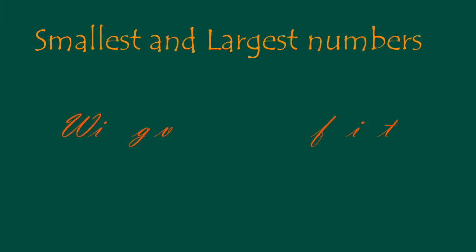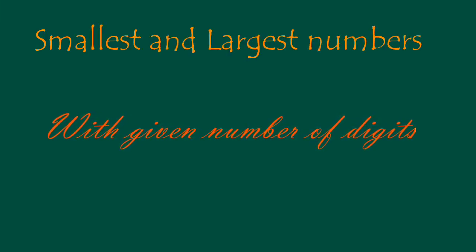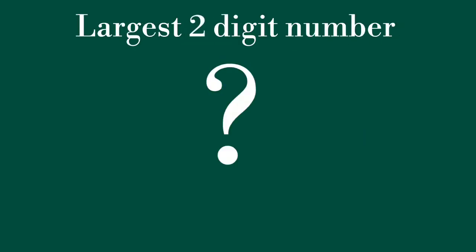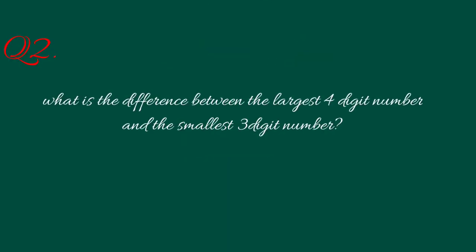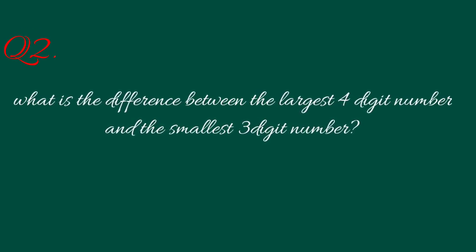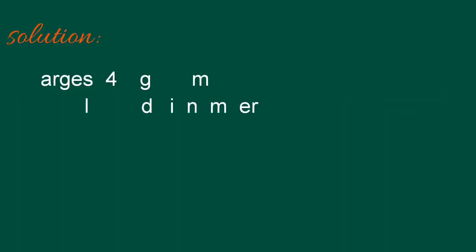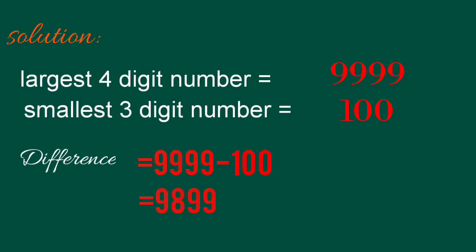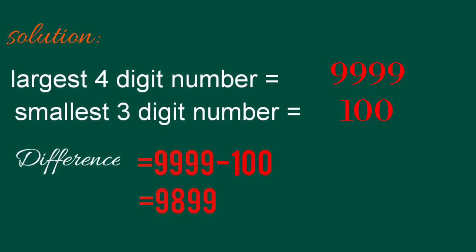Our next topic will be framing the smallest and the largest number with a given number of digits. The largest 2-digit number is 99. Now, can you say what will be the difference between the largest 4-digit number and the smallest 3-digit number? The largest 4-digit number is 9999 and the smallest 3-digit number is 100, so their difference will be 9899.